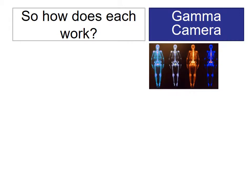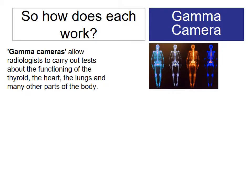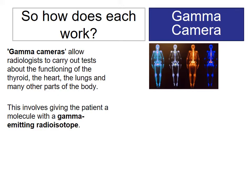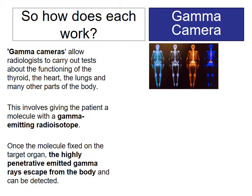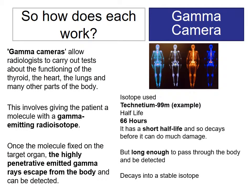Looking at a gamma camera, the way it works is it lets radiologists look at the functioning of different parts of the body's organ systems, like the thyroid, the heart, and the lungs. This usually involves gamma-emitting radioisotopes, because they can leave through the organs so you can detect them outside the body. Again, you're looking for an isotope with a reasonably short half-life, such as technetium-99, for the same reasons as you would use it for testing the efficacy of your kidneys.